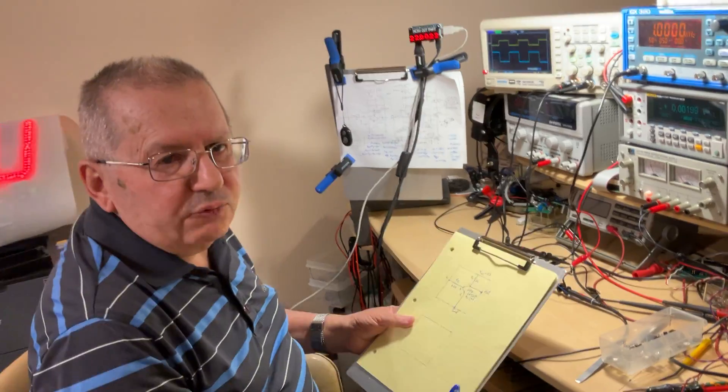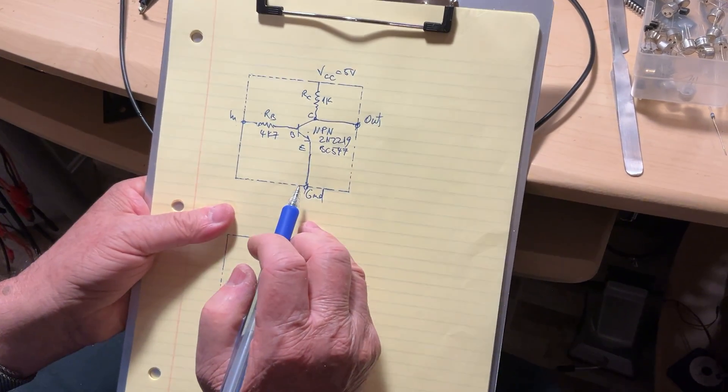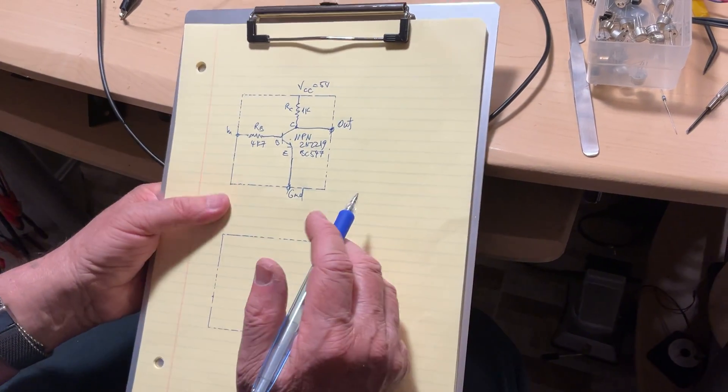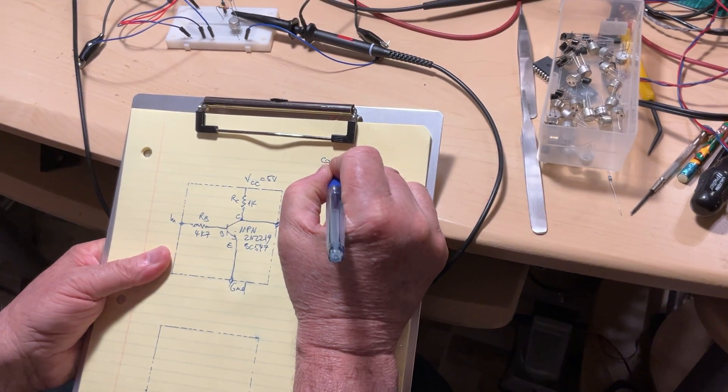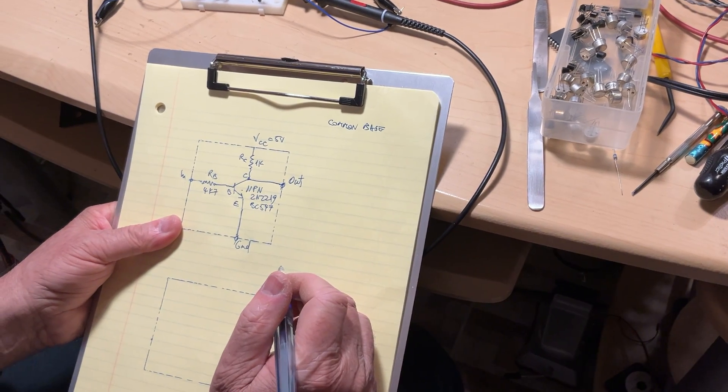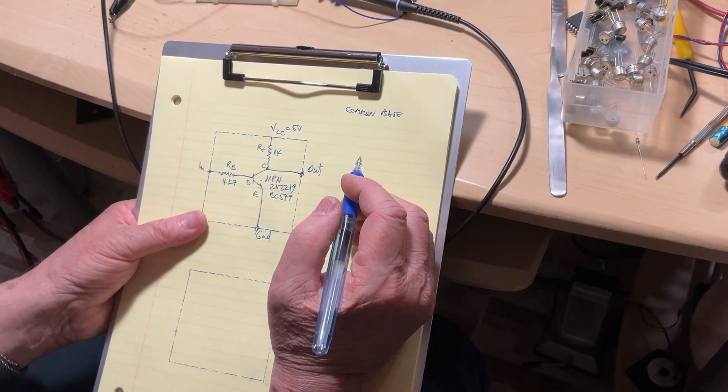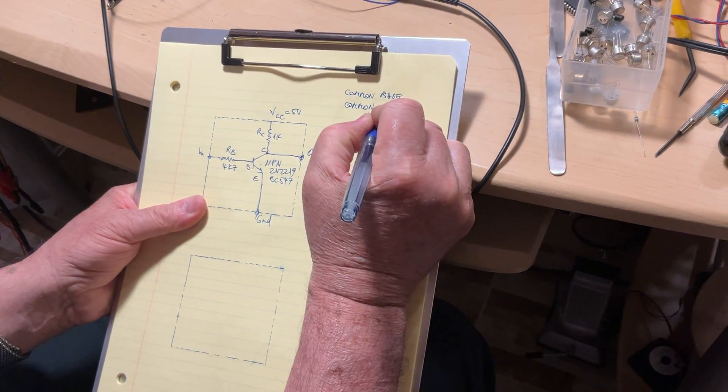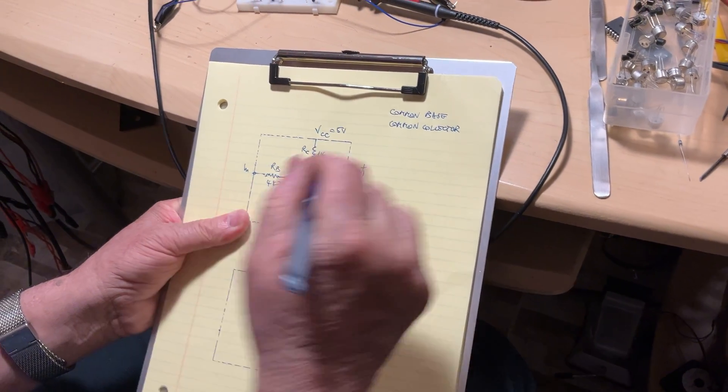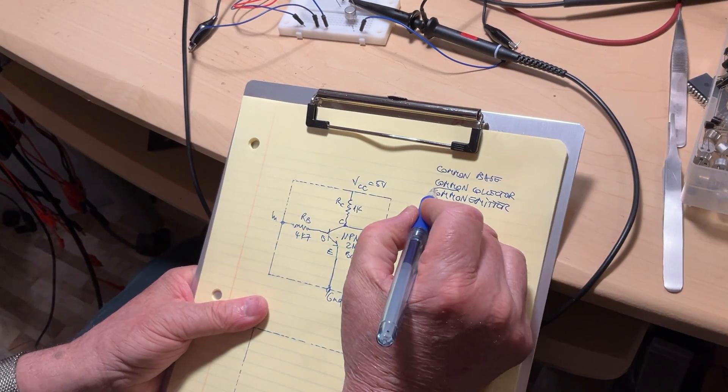A transistor has three terminals: base, collector, and emitter. Depending which of them is touching one of the legs of the power supply, either the negative or the positive, it gives the name of that connection for the transistor. You may have the common base connection where the base is connected to the common. Then there is the common collector. And ours, because the emitter is touching the ground, is the common emitter. This is the one we're using now, common emitter.